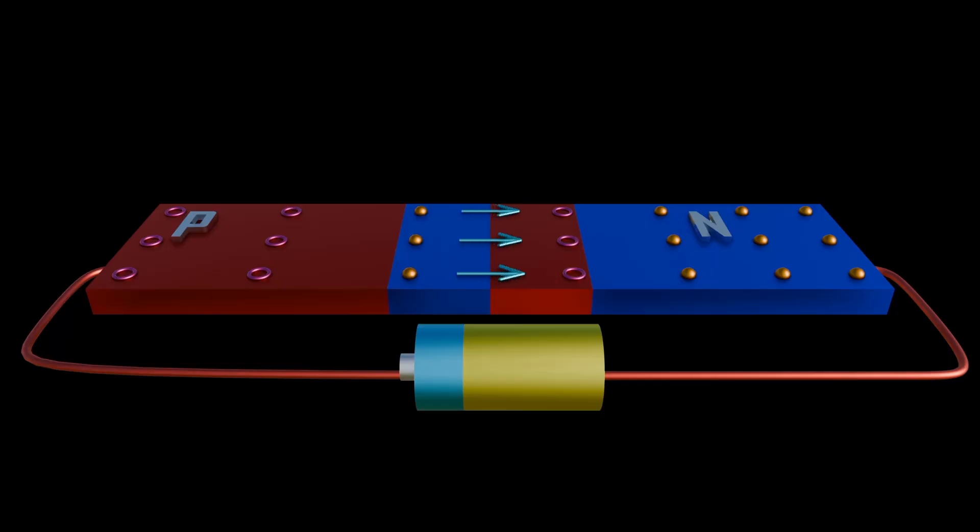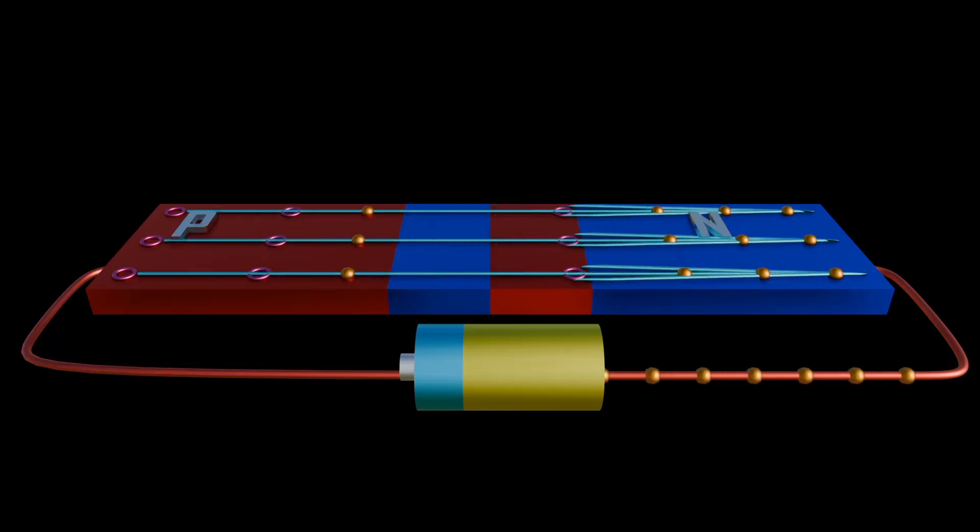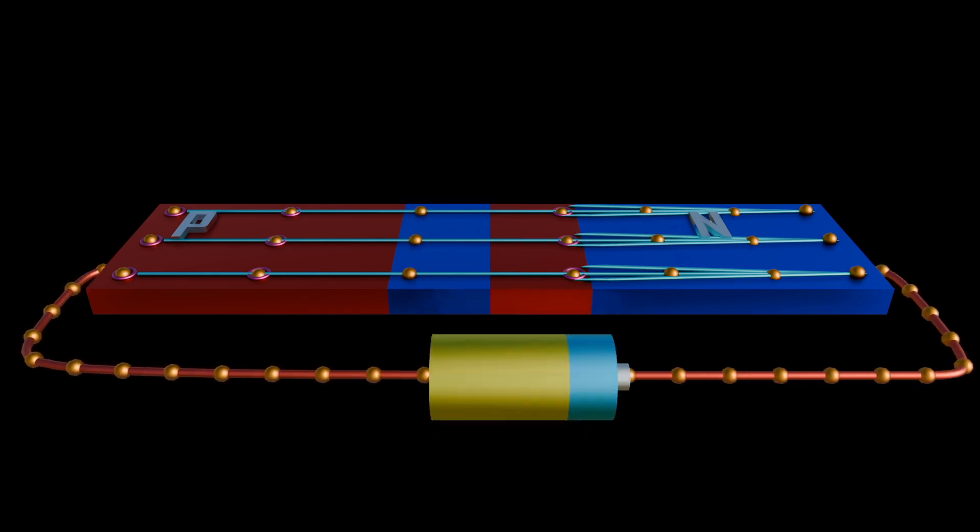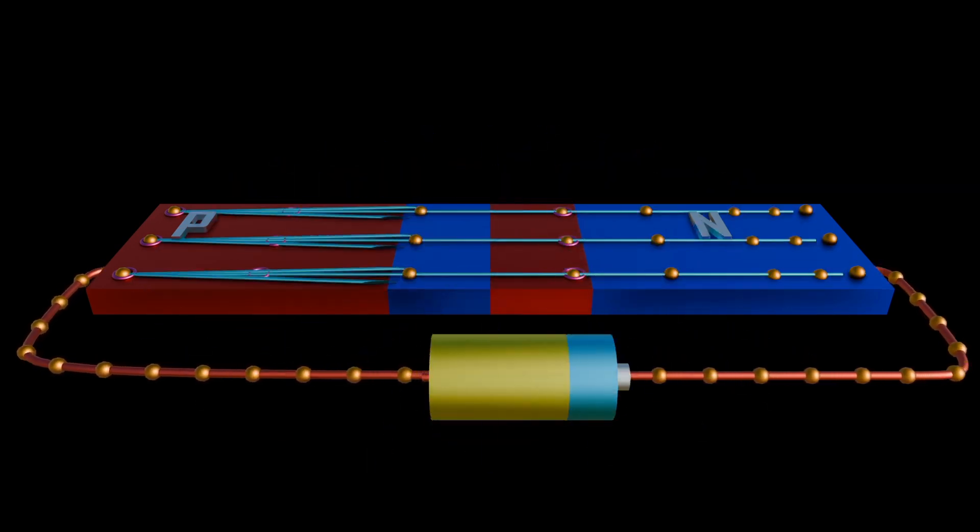Zener diode works similarly to a normal P-N junction diode when forward biased. That is, it conducts current. But when the Zener diode is reverse biased, it works on the principle of Zener effect. But first let's review how a diode works, precisely a P-N junction diode.